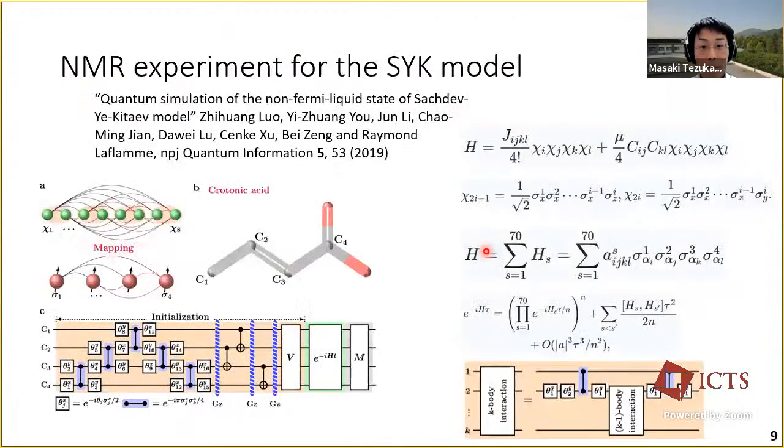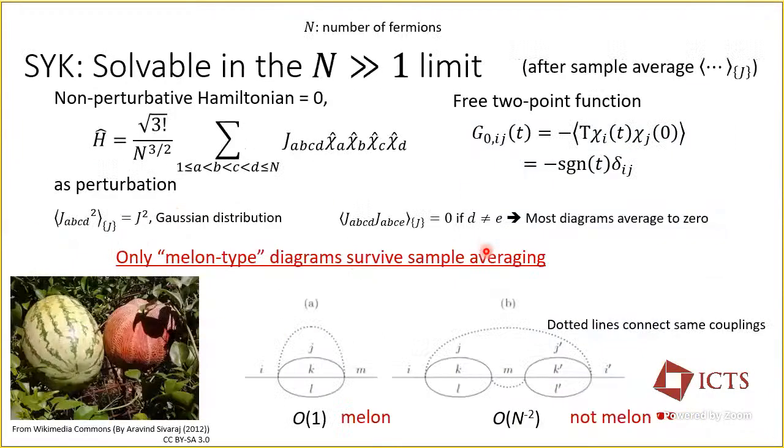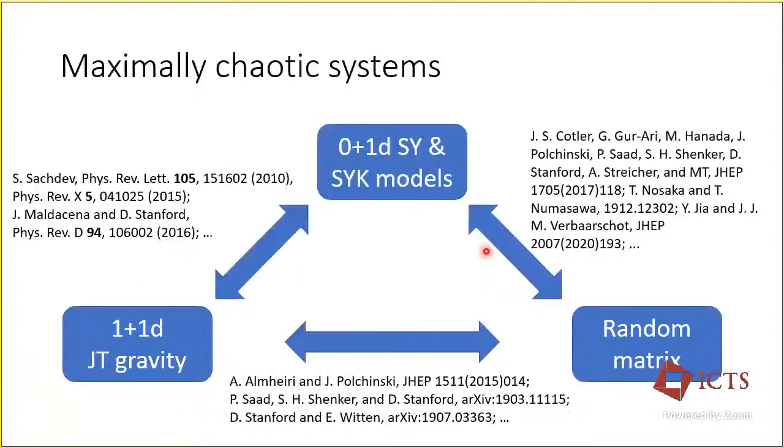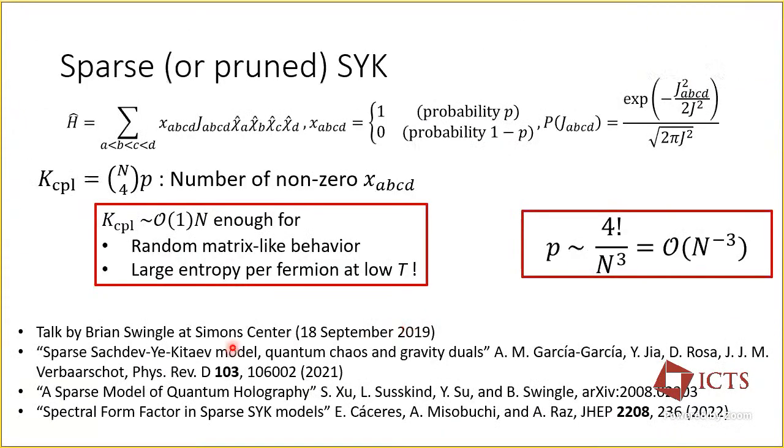Can I ask a question? So has the gravity dual been looked at for this sparse SYK model? Like what are the gravity properties on the JT side? Like what effects can we observe for the introducing a sparse SYK model? Is there some literature on that? The papers by these people discuss gravity duals. But I'm afraid I don't understand everything, but maybe it's not as concrete as in the dense SYK case.